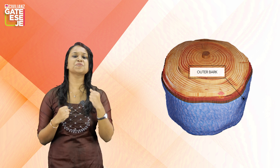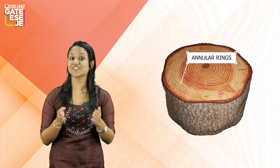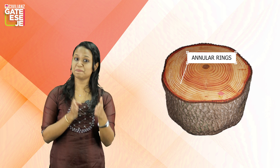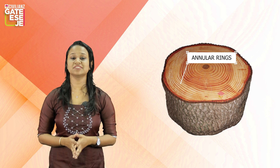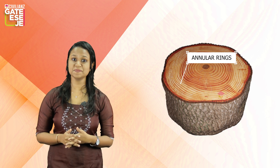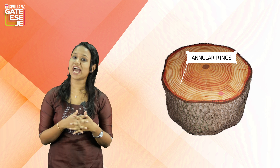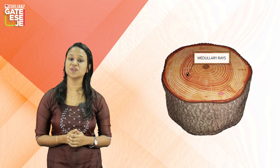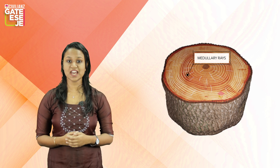The outermost portion of timber is called outer bark. The function of outer bark is to protect the timber from external impacts. Now, here come the annular rings. Annular rings are the concentric circles between pith and cambium. Each year, one annular ring develops, and the age of the tree can be determined from the annular rings.